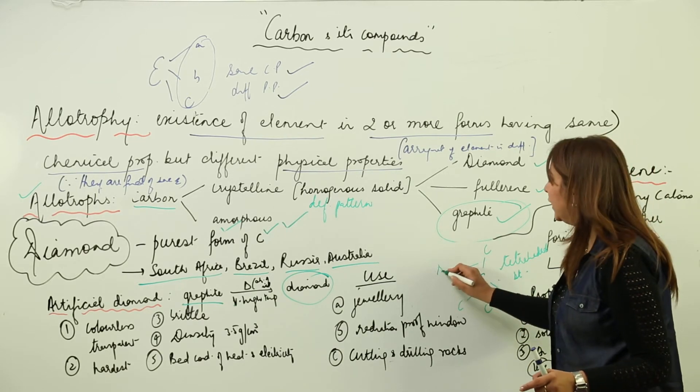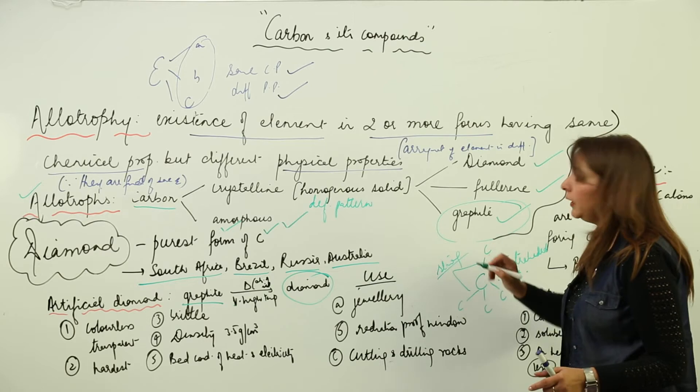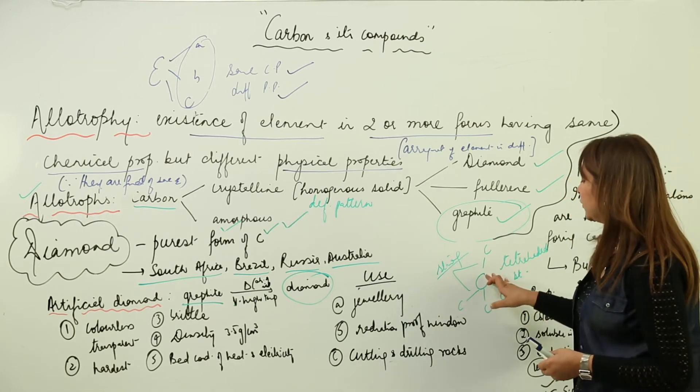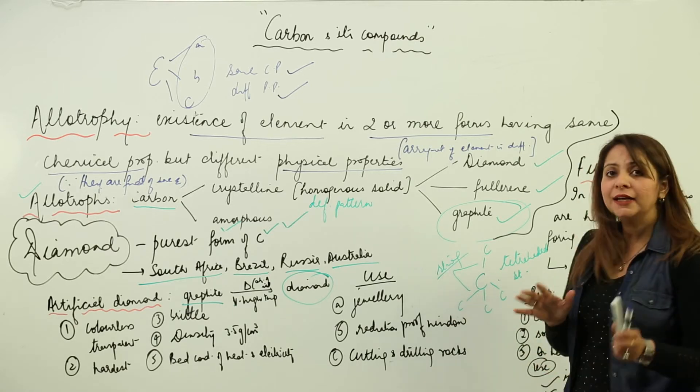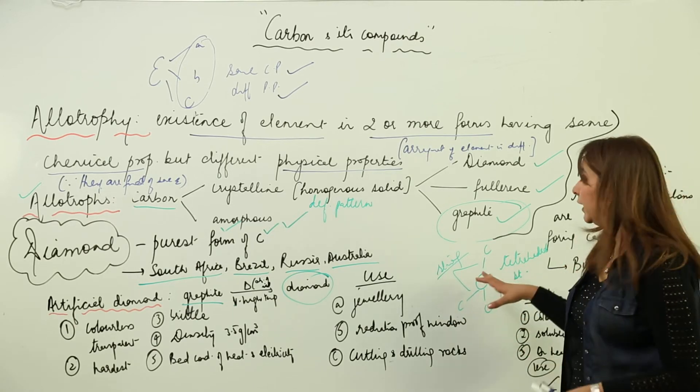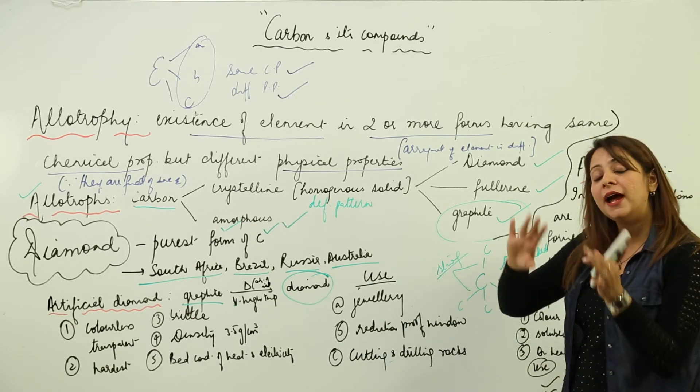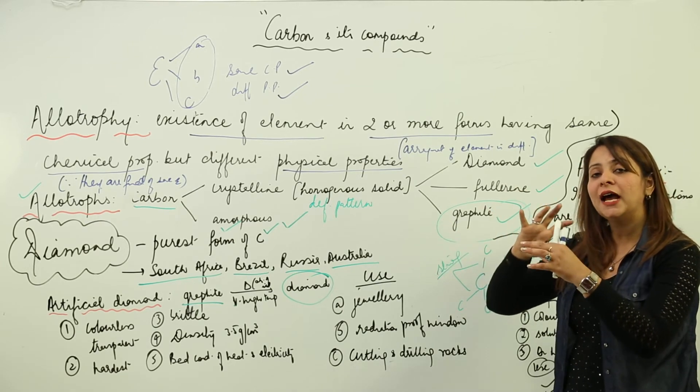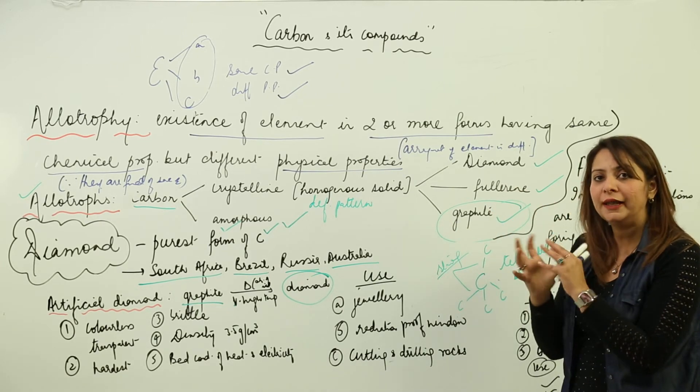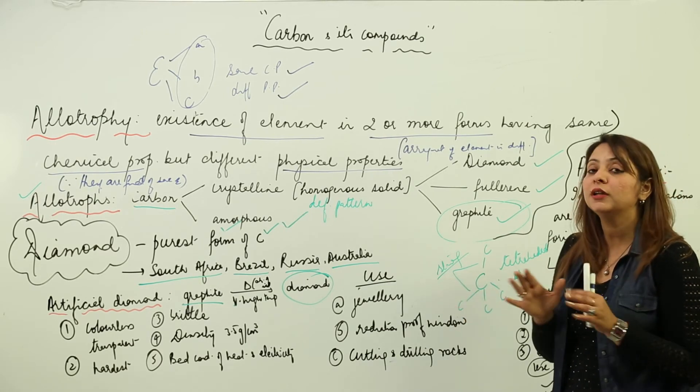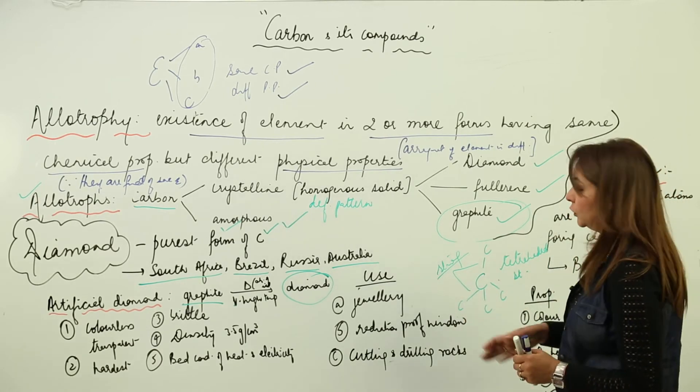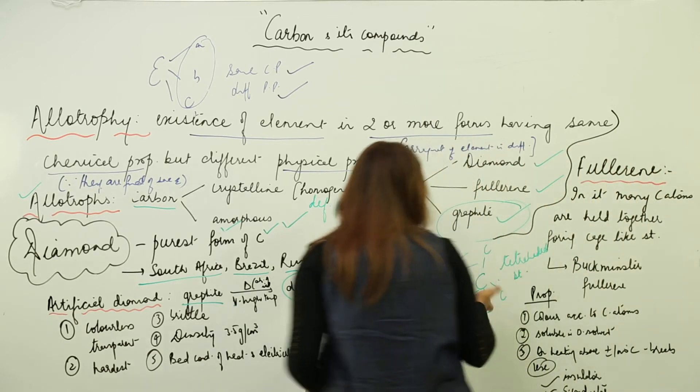Moreover, the bonds which are formed are very strong bonds. Each carbon atom linked to four others forms a tetrahedral structure. In graphite it was hexagonal, here it is tetrahedral. There the bonds were weak with slipping of layers, but here the bonds are very strong with no slipping. Therefore, diamond is the hardest substance known.